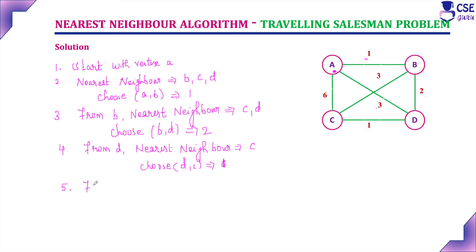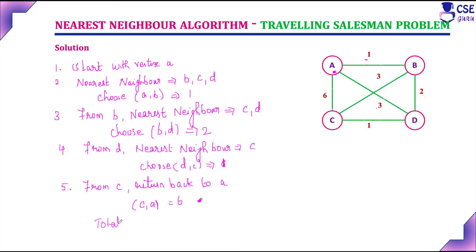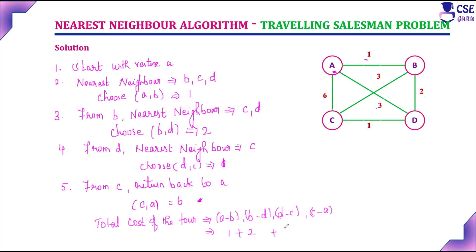From C, we return back to A. C to A costs 6. So the total cost of the tour — A to B, B to D, D to C, C to A — is 1 + 2 + 1 + 6 = 10.